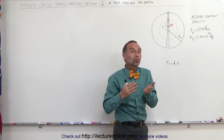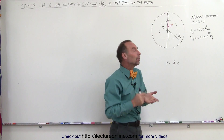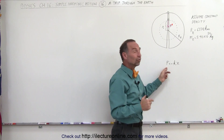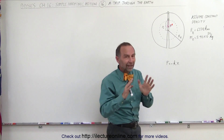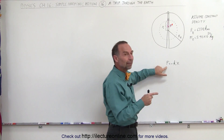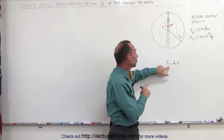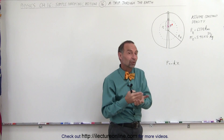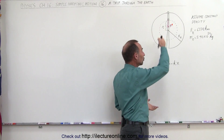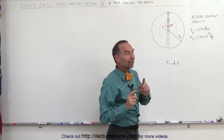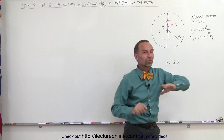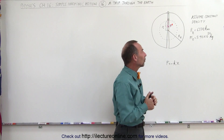The question is: if we could do that, what would be the time it would take for the object to travel through the earth? This is only possible theoretically if the motion can be described by a force equal to minus kx, because F equals minus kx would indicate simple harmonic motion. We also have to assume that the earth has constant density throughout, which is of course not true, but let's say it was.